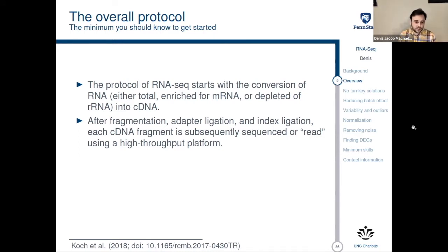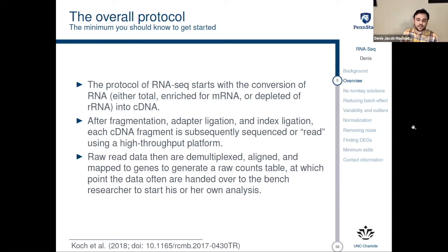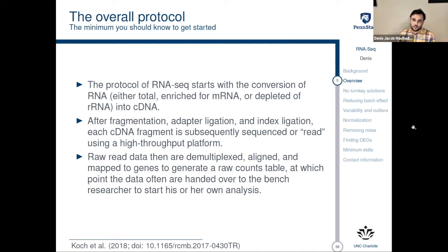This is the kind of sequencing technology you're going to be using, and normally you don't need to understand much about it because you're going to be paying someone to do the sequencing for you. Raw sequence data is then demultiplexed, aligned, and mapped to genes to generate a raw count table, at which point the data are often handed over to the bench researcher. For the purposes of today's workshop, I'm going to imagine the most common situation in which you are getting the assembled transcripts from the sequencing facility and doing all the remaining analysis yourself. We can also talk about transcriptome assembly at a later point — you can email me about that.